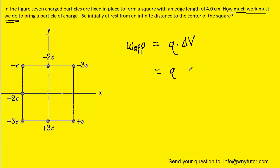Now we can rewrite the change in potential as the final potential minus the initial potential. And another key concept is that because the charge is beginning its journey from an infinite distance, we can assume that the initial potential is equal to 0 volts.